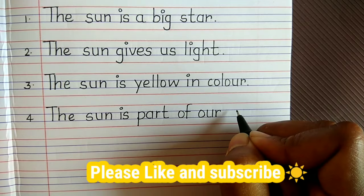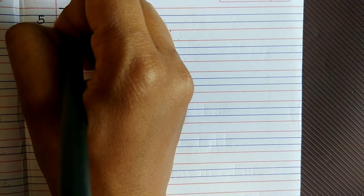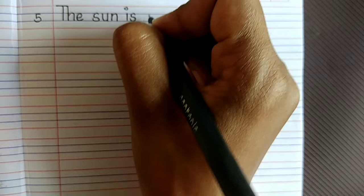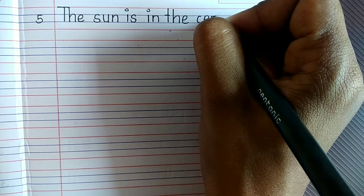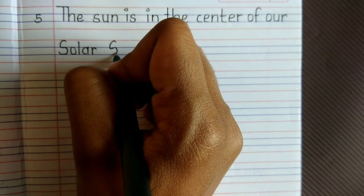Fourth point, the Sun is part of our solar system. Fifth point, the Sun is in the center of the solar system.